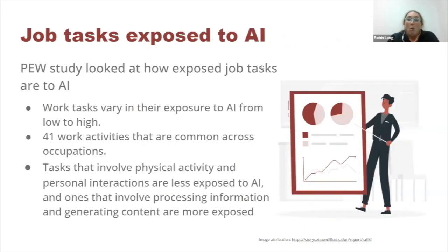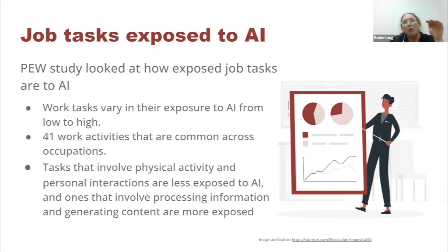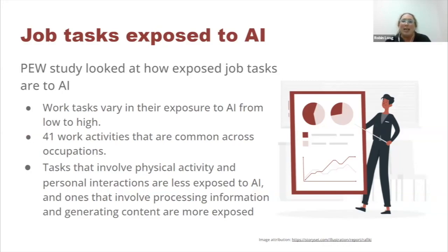One of the research studies I looked at — the one I'm going to focus on most — was a Pew study. It talked not about what's the risk of jobs disappearing, which we can't answer, but about the list of job tasks: how exposed are those job tasks to artificial intelligence? That's an interesting angle, because for us in our trades, when we look at the rapport sur l'analyse de la situation de travail, it gives a list of trade tasks. We could correlate and see how much AI is being introduced into these trades.